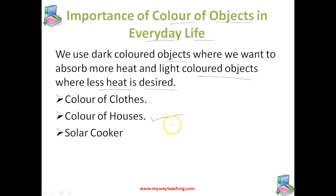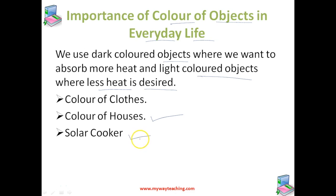Regarding the color of houses: houses in hot sunny countries are usually painted white or light colors on the outside, because a white house absorbs very little sun heat and reflects most of the sun's heat rays, keeping the house cool in summer. As for the solar cooker: the box of a solar cooker is painted black on the inside, because a black surface is a very good absorber of heat and will absorb maximum heat radiations from the sun.